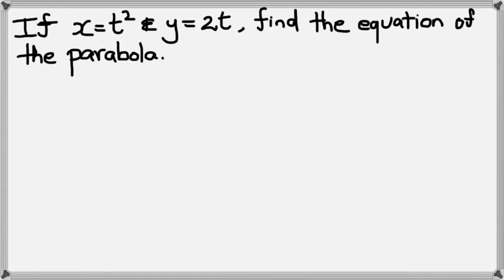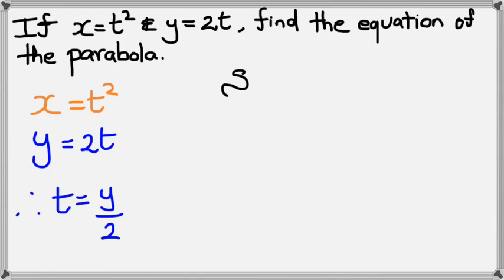All right guys, so let's have a look at an example. If x equals t² and y equals 2t, find the equation of the parabola. So we have x equals t² and y equals 2t, which means t is equal to y divided by 2.